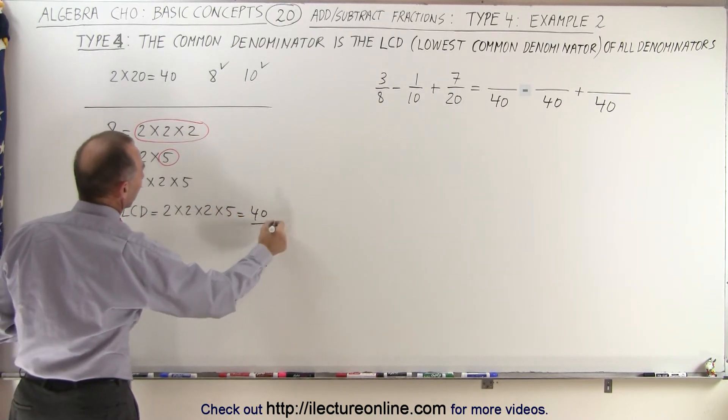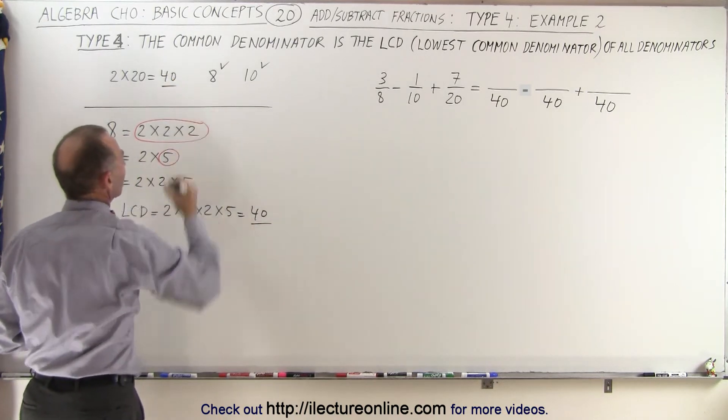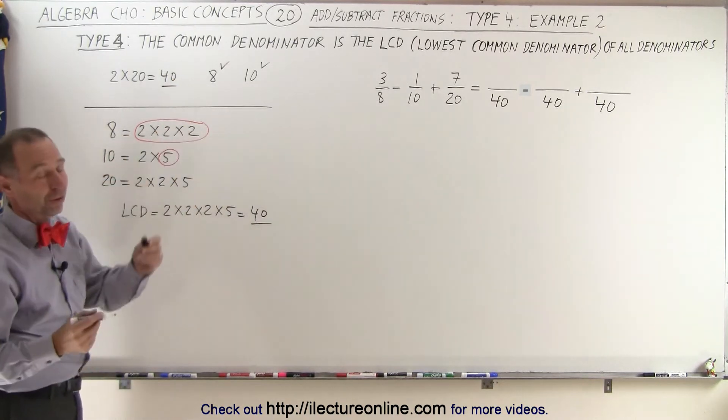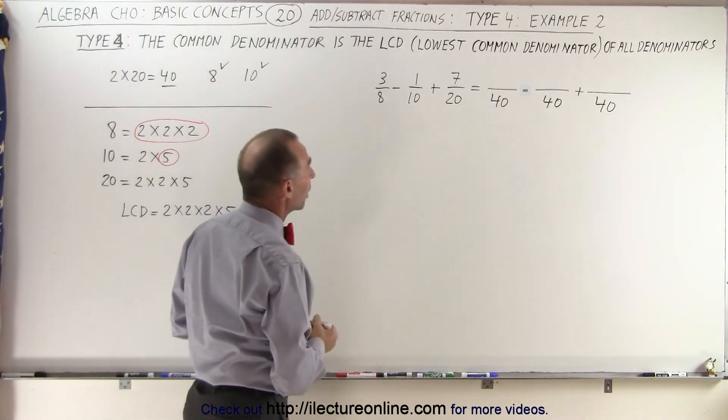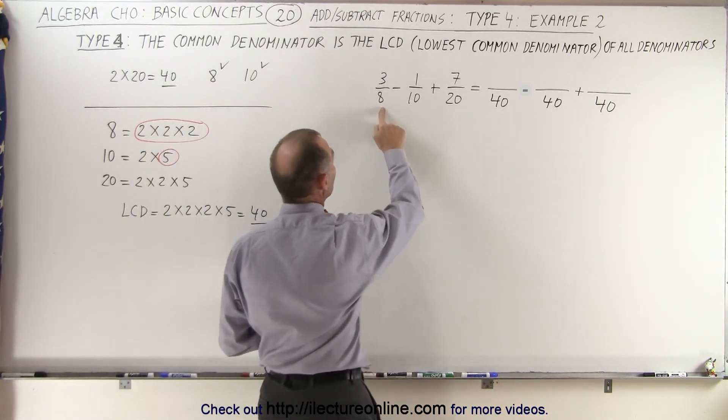And so here we then get the LCD will be equal to 2 times 2 times 2 times 5, which is 40. And of course, we ended up with the same number, but this method was a much, much faster method. Again, since we now know what the lowest common denominator is, we take a look here and we say, well,